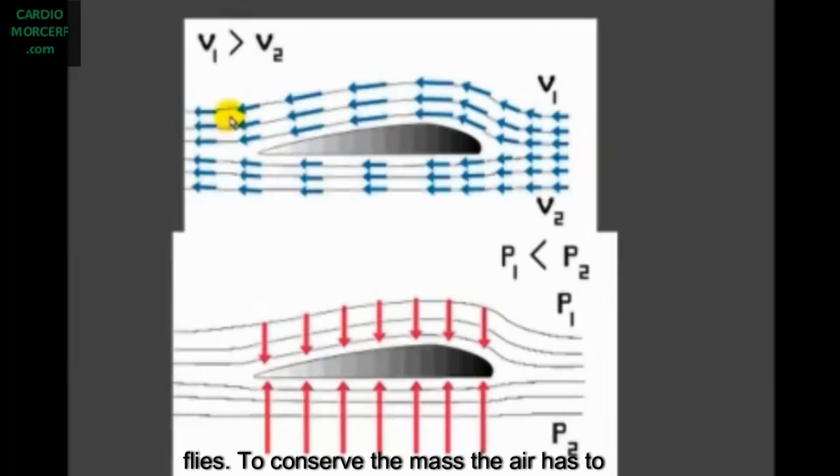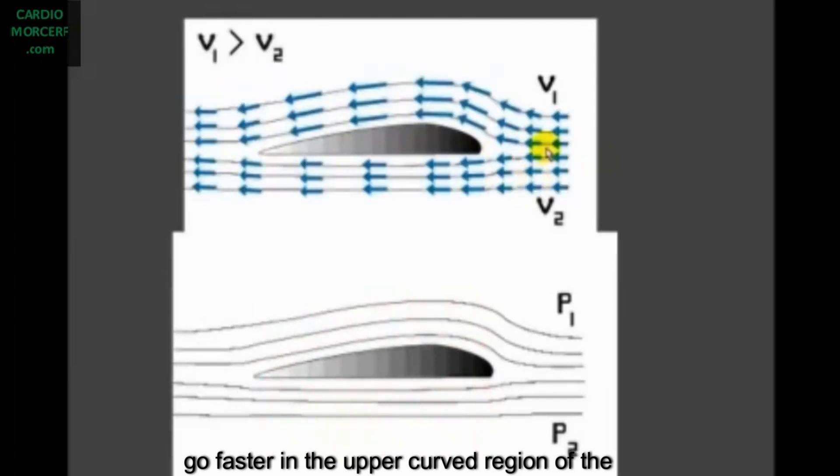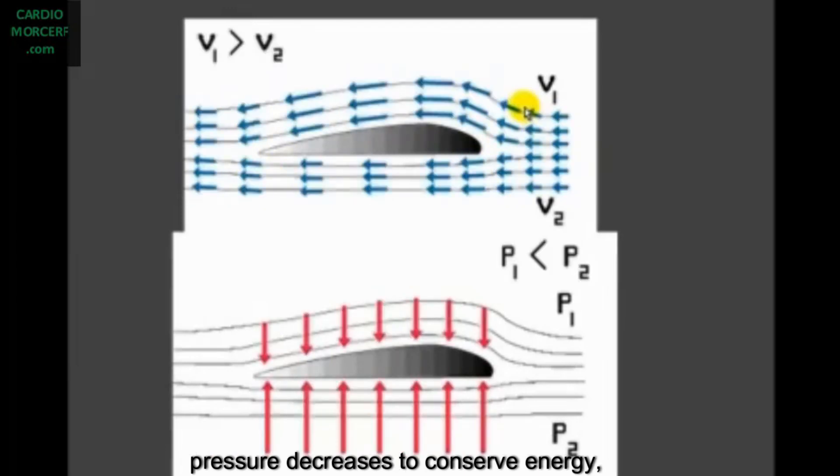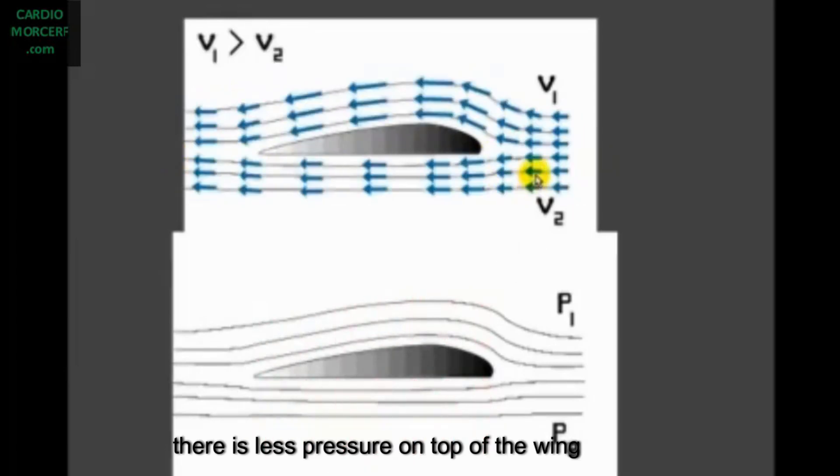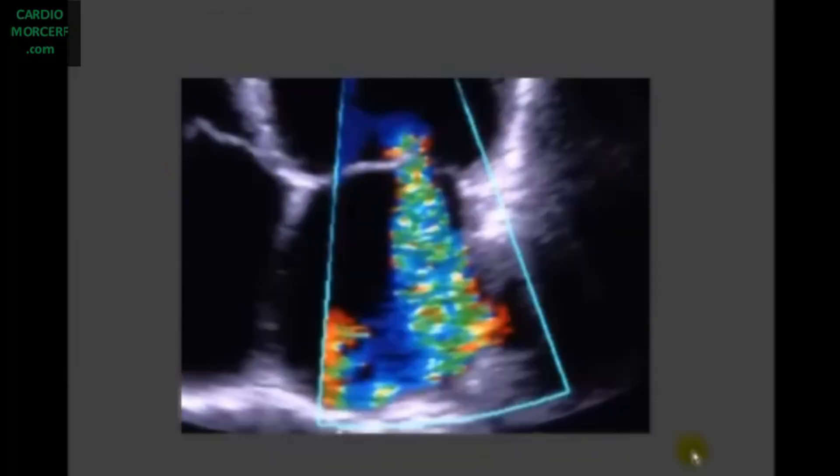To conserve the mass, the air has to go faster in the upper curved region of the wing than in the lower straight part of it. But when the air velocity increases, the pressure decreases to conserve energy. Then there is less pressure on the top of the wing than in its bottom and the airplane moves up.